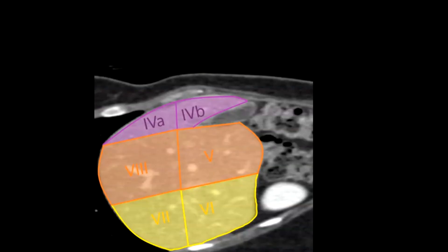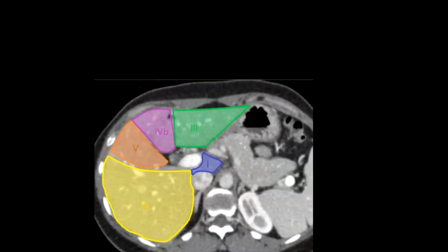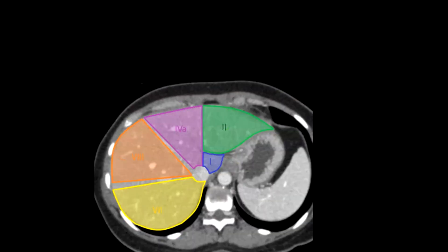More laterally you have 4b (inferior segment), 4a (superior segment), 5, 8, 6, and 7. In transverse CT, the inferior portion shows segments 3, 4b, 5, and 6 along with the caudate lobe (segment 1). The superior portions show segment 2, caudate lobe, 4a, segment 8, and segment 7.